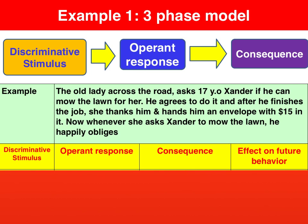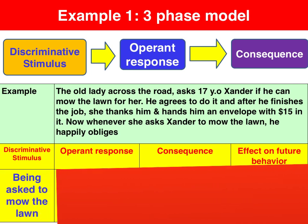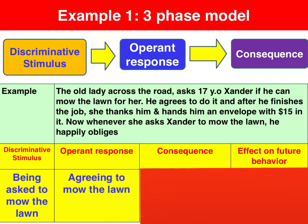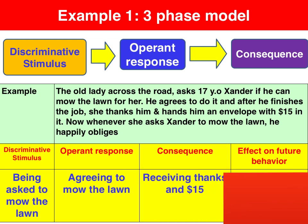The old lady across the road asks Sander if he can mow the lawn for her. He has a choice — he can do it or he might choose not to. In this case he agrees to do it, and after he finishes the job she thanks him and hands him $15 cash. Now whenever she asks Sander to mow the lawn, he happily obliges. So the discriminative stimulus is being asked by the old lady to mow the lawn. His operant response is agreeing and actually mowing the lawn. The consequence is getting a pat on the back and $15 cash.